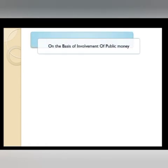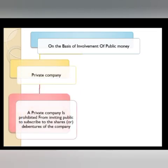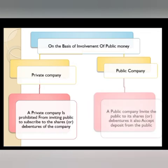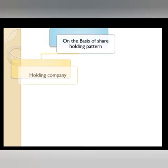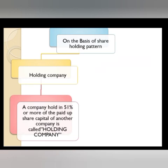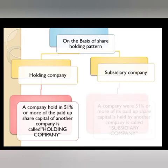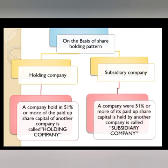On the basis of involvement of public money: 1. Private Companies: A private company is prohibited from inviting the public to subscribe to the shares or debentures of the company. 2. Public Companies: A public company invites the public to subscribe to its shares or debentures. It also accepts deposits from the public. On the basis of shareholding pattern: Holding Company: A company holding 51% or more of the paid-up share capital of another company is called a holding company. Subsidiary Company: A company where 51% or more of its paid-up share capital is held by another company is called a subsidiary company.